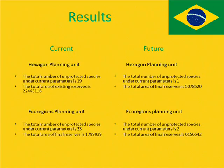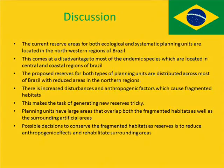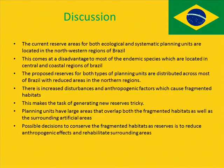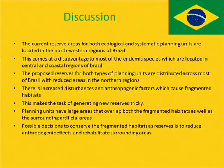The current reserve areas for both ecological and systematic planning units are located in the north-western regions of Brazil, a region of almost no artificial land uses, thus it is better to conserve there. With reduced disturbance and anthropogenic factors, the habitat in the north-western regions is untouched and biodiversity remains undisturbed. However, this comes at a disadvantage to most of the endemic species which are located in central and coastal regions, supported by a low number of protected species for both respective planning units.